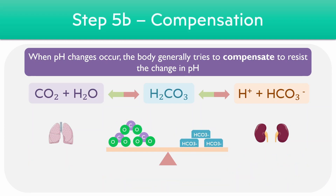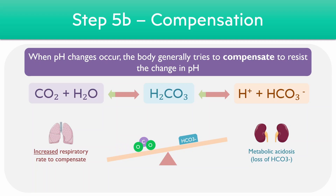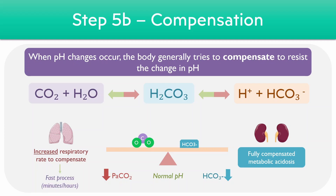Let's take a look at another example of compensation. In this instance, we have a reduction in the levels of bicarbonate ions — in other words, a metabolic acidosis. The scale shifts because there's more carbon dioxide in comparison. The body detects this change in pH and signals to the lungs to increase the respiratory rate and drive off more CO2, helping to restore the balance once more. By the end of this process, we have a reduction in the bicarbonate ions because of the initial defect, but also a reduction in the CO2 as compensation, resulting in a normal pH — a fully compensated metabolic acidosis. In comparison to metabolic compensation, respiratory compensation is much quicker and usually occurs within minutes or hours.